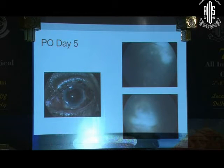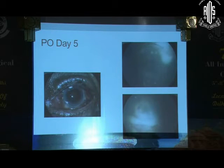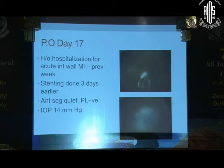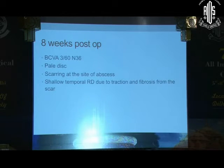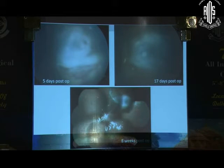On post-operative day 5, the eye was congested but the macular area was now clear, with residual necrosis and hemorrhage in the area of the abscess. In between, he was hospitalized for an acute myocardial infarction and received a stent. By post-op day 17, the fundus view was fairly clear and the abscess was beginning to get fibrosed, with intraocular pressure of 14 mmHg. At 8 weeks post-operatively, his vision had improved to 3/60 N36 with a pale disc, the retina was attached, and there was scarring at the site of the abscess with a little traction at the edge.